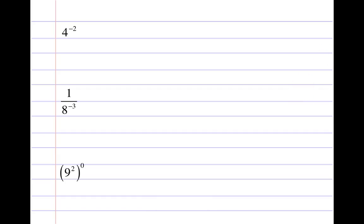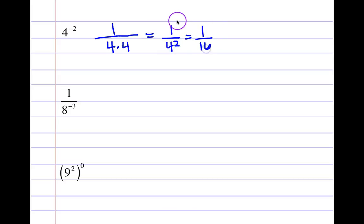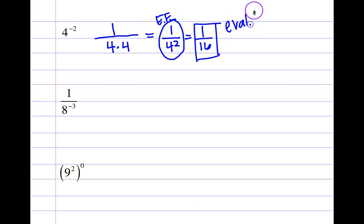Let's try some examples. Here, because it's a negative exponent, I'm going to repeat four — but since it's negative, I'm dividing by four. You start with one and divide by four a total of two times. This is equivalent to one over four squared, which equals one-sixteenth. This is your exponential form, and one-sixteenth is your evaluated or simplified answer. It all depends on the instructions.